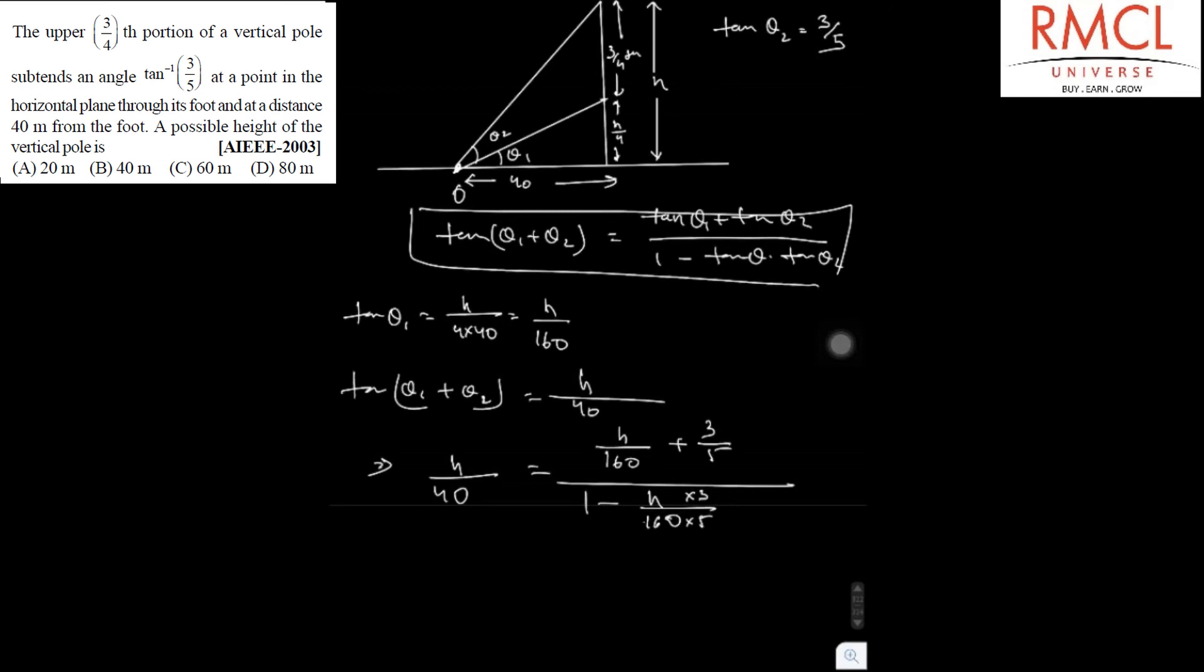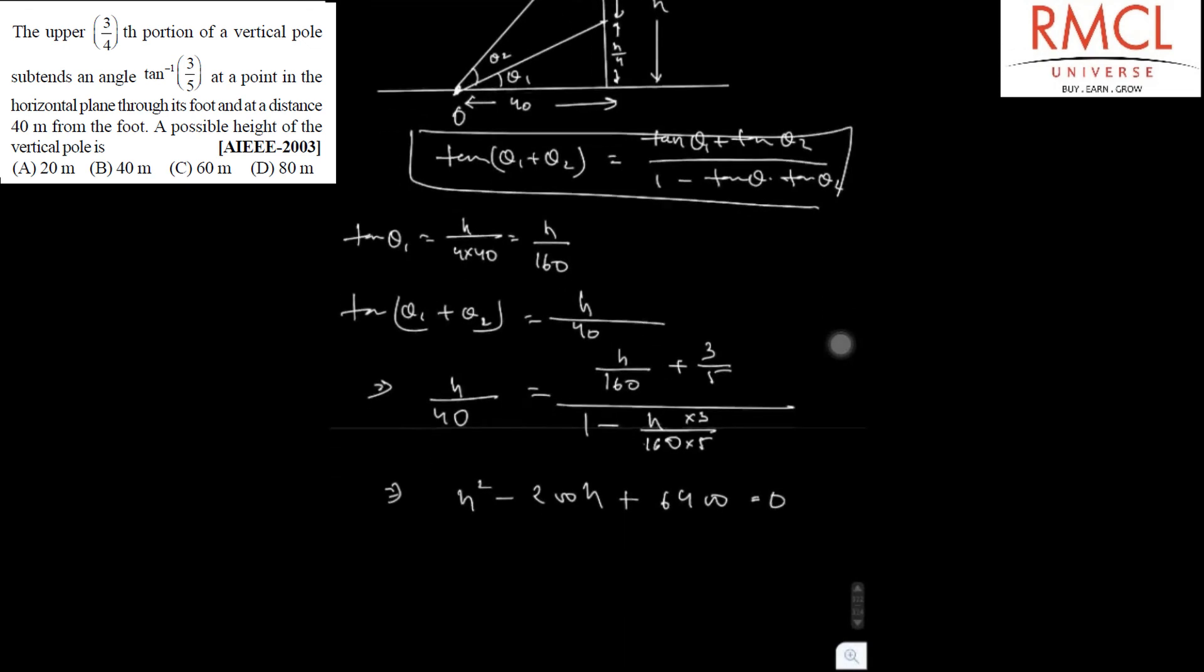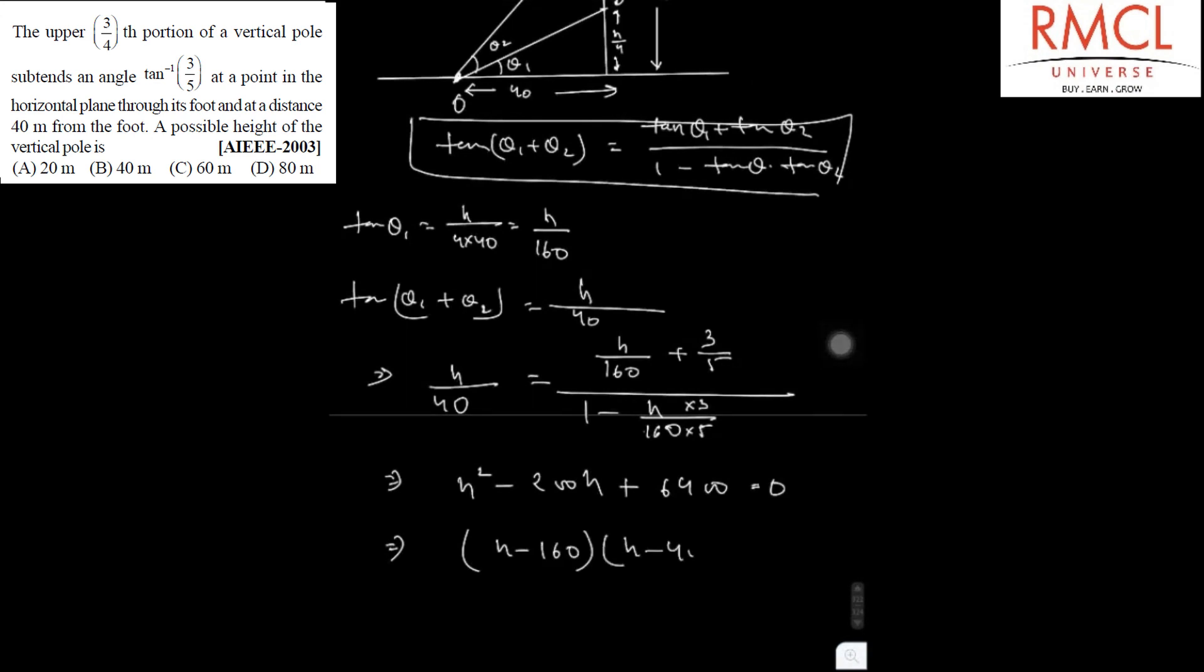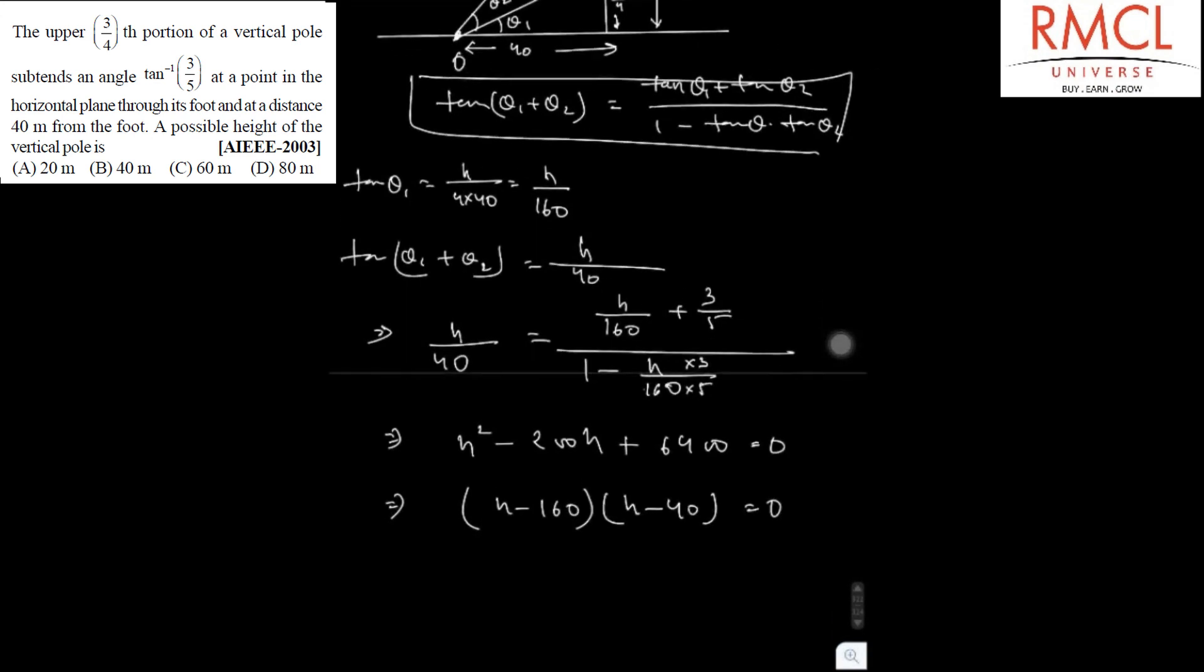So now we can have a quadratic equation in terms of h. The equation will be h square minus 200 h plus 6400 is equal to 0. So this is h minus 160 multiplied by h minus 40 is equal to 0. So the value of h is 160 meter or 40 meter.